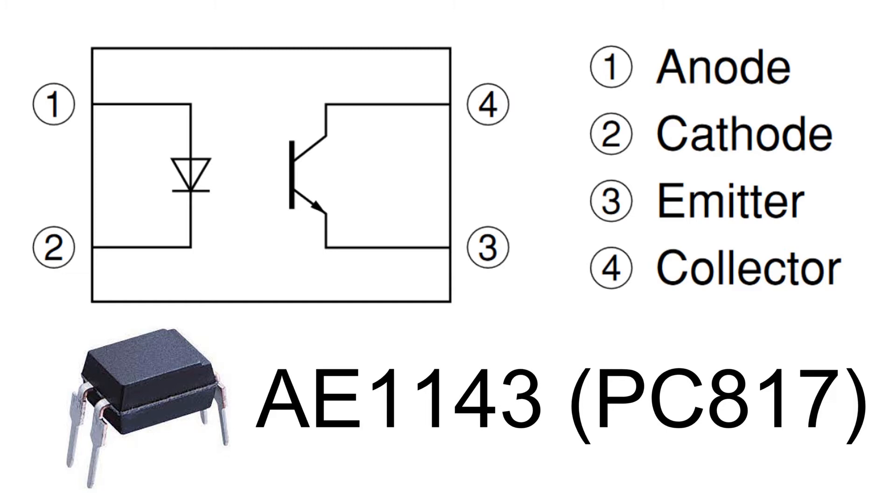In its simplest form an optocoupler is a LED and photodiode. A typical optocoupler has the two components encased in an epoxy shell, with the pins connected to the LED and photodiode.